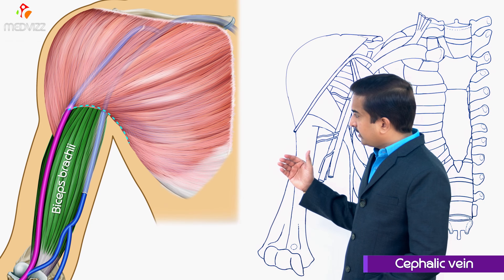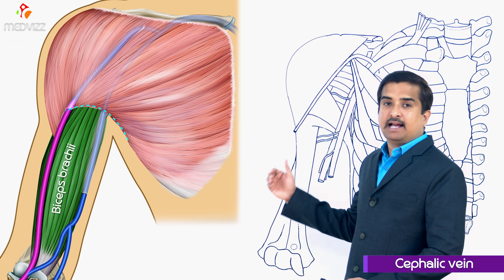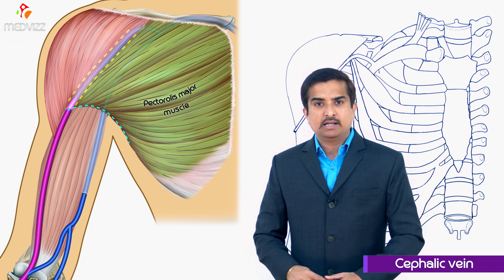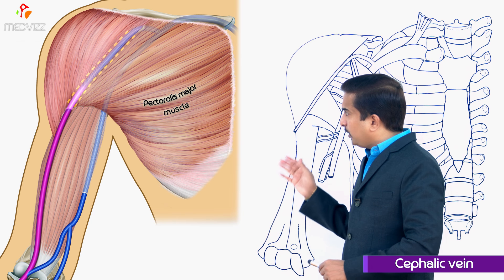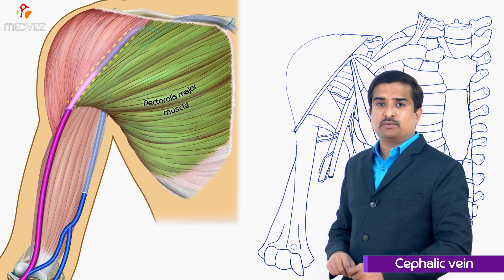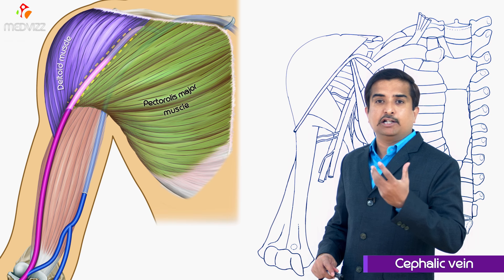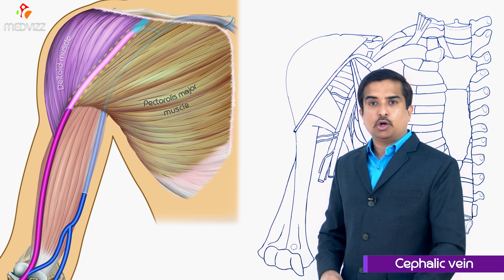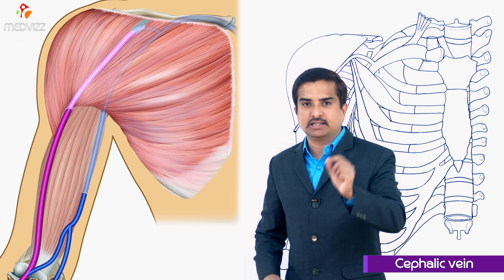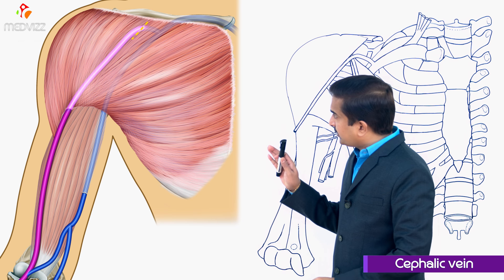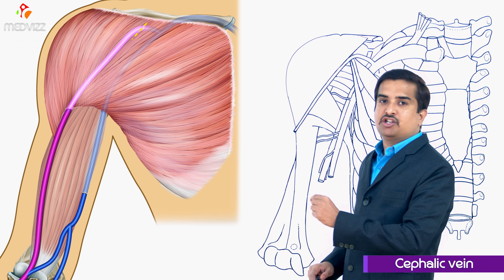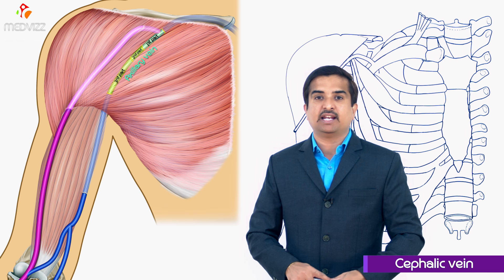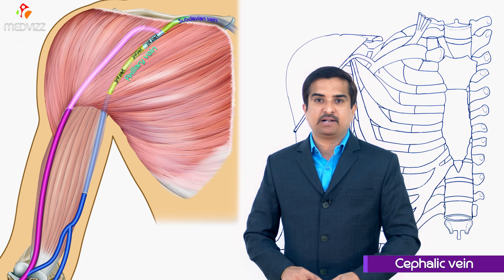It finally pierces the deep fascia at the lower border of the pectoralis major and runs in the cleft between the pectoralis major and deltoid, called the deltopectoral groove, up to the infraclavicular fossa. At the infraclavicular fossa, it pierces the clavipectoral fascia and drains into the first part of the axillary vein.